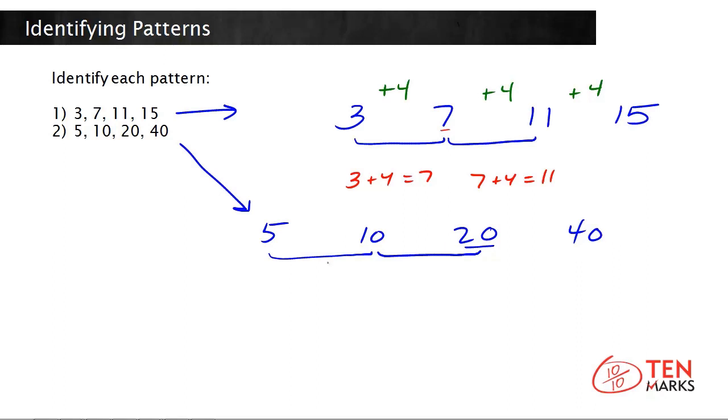How else can you get from 5 to 10? 5 times 2 equals 10. Okay, so let's see if multiplying by 2 is the rule.